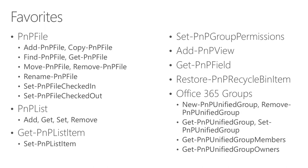Some of my favorite PNP PowerShell capabilities: Add-PnPFile to upload a file in a single line, Get-PnPFile to download, move, or rename files. If you want a script to bulk check in or check out files, there's a command for that. You can create lists, modify lists, manage list items, permissions, add or remove views and fields, Restore-PnPRecycleBinItem — I've got a great story about that — and Office 365 group management like New-Group and Get-Group.